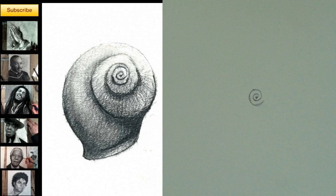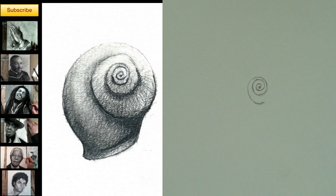Step 1. Draw this squiggly circle shape that looks like the beginning of a Scooby-Doo cartoon. Step 2. Add another loop to your Scooby-Doo thingy, and notice that it gets slightly wider. How much wider, you ask? I don't want to go Fibonacci on you, so just use your observation skills and say to yourself: it gets a little wider.